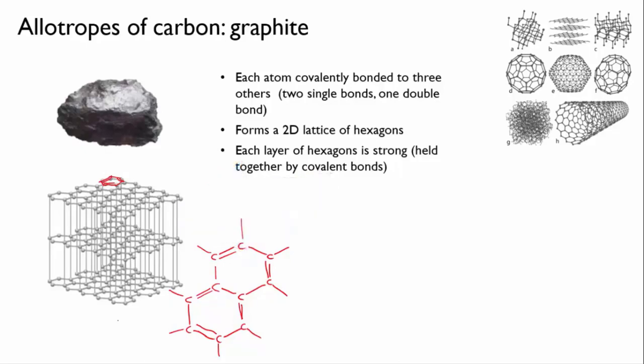There are no covalent bonds that tie the separate sheets together, only these weak attractions. So this means that the sheets can be separated from each other quite easily, and this is exactly what happens when you drag the tip of a pencil across some paper. Sheets of graphite are sheared off from the main lump and stick to the paper.